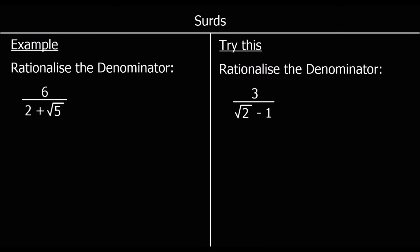Here we've got a different question: 6 over 2 plus root 5. We still want to rationalise the denominator — get rid of the surd from the bottom. But this is more complicated because we've got 2 plus root 5 on the bottom. We're still going to multiply top and bottom by the same thing, but what can we multiply by to get rid of the surd? What we're going to use here is the difference of two squares.